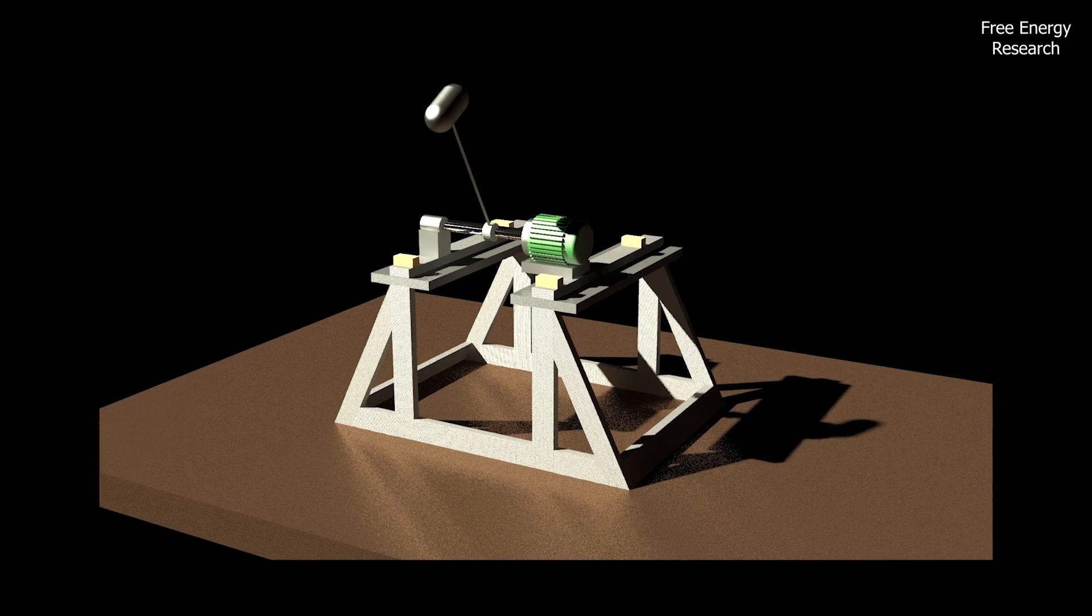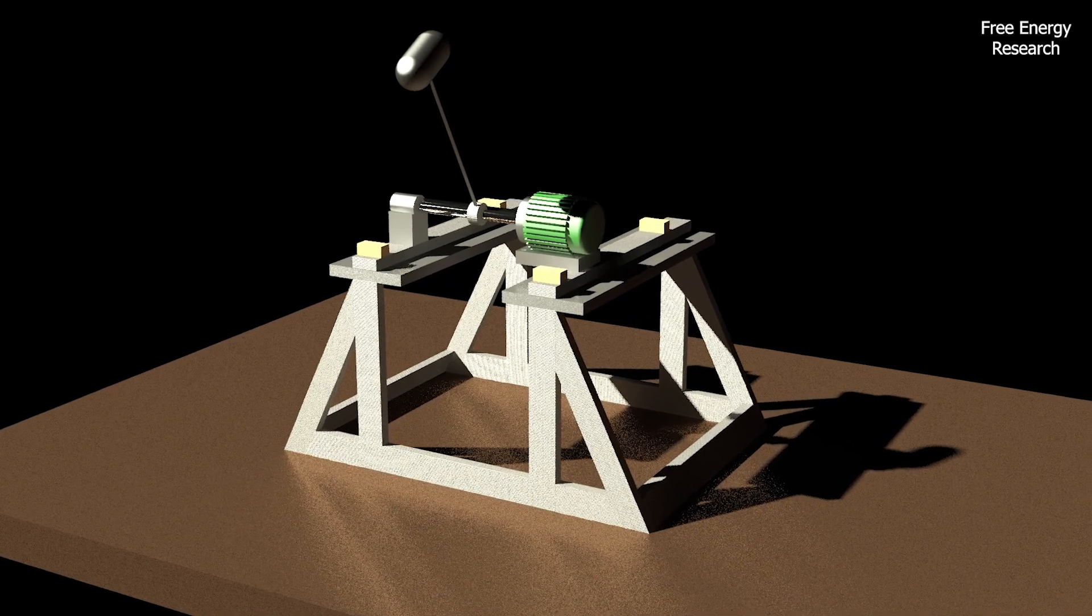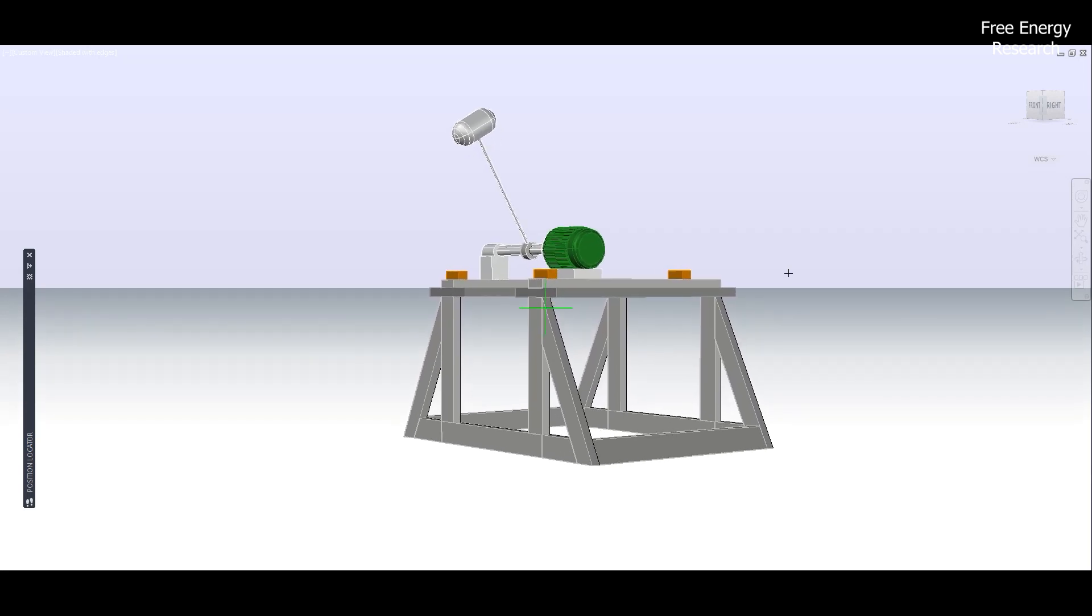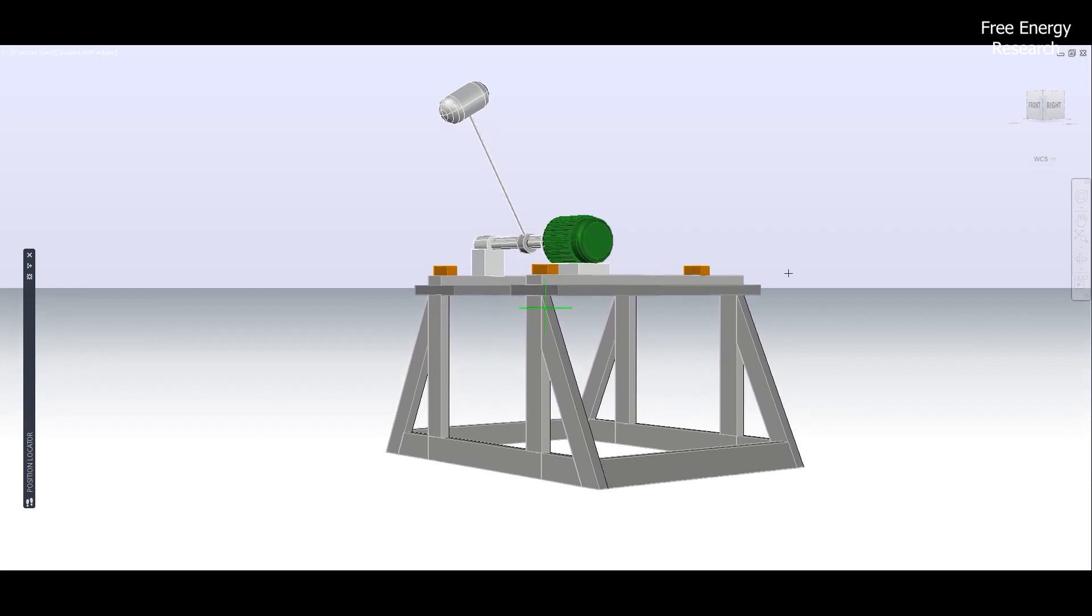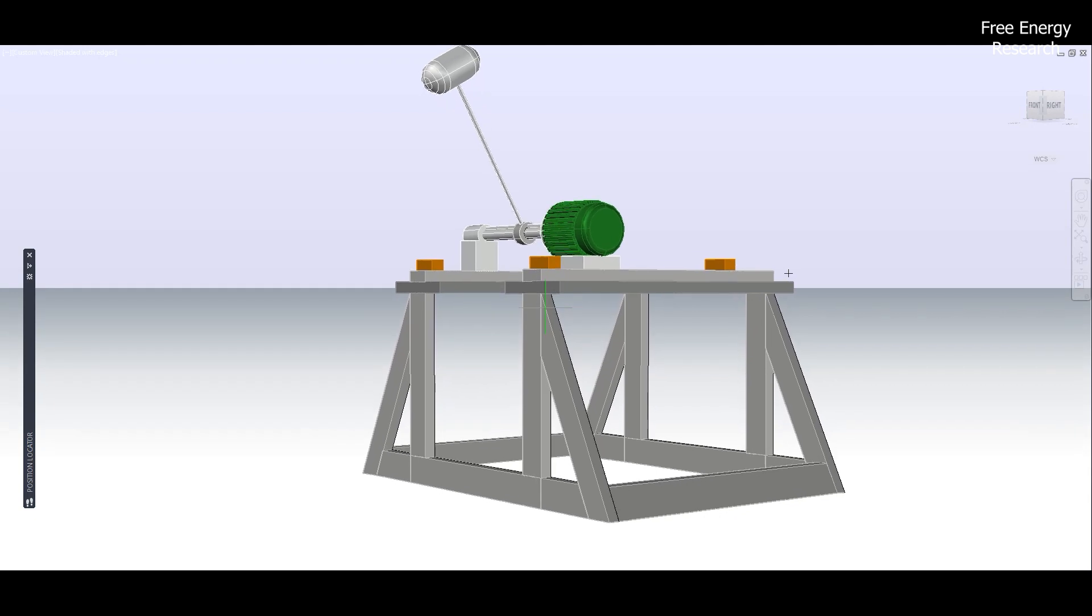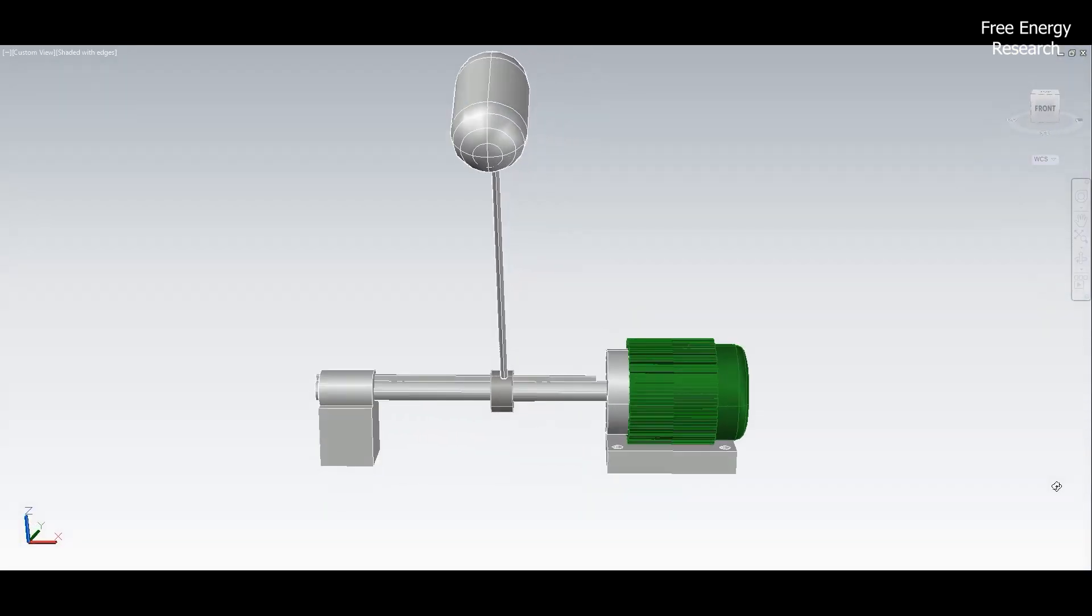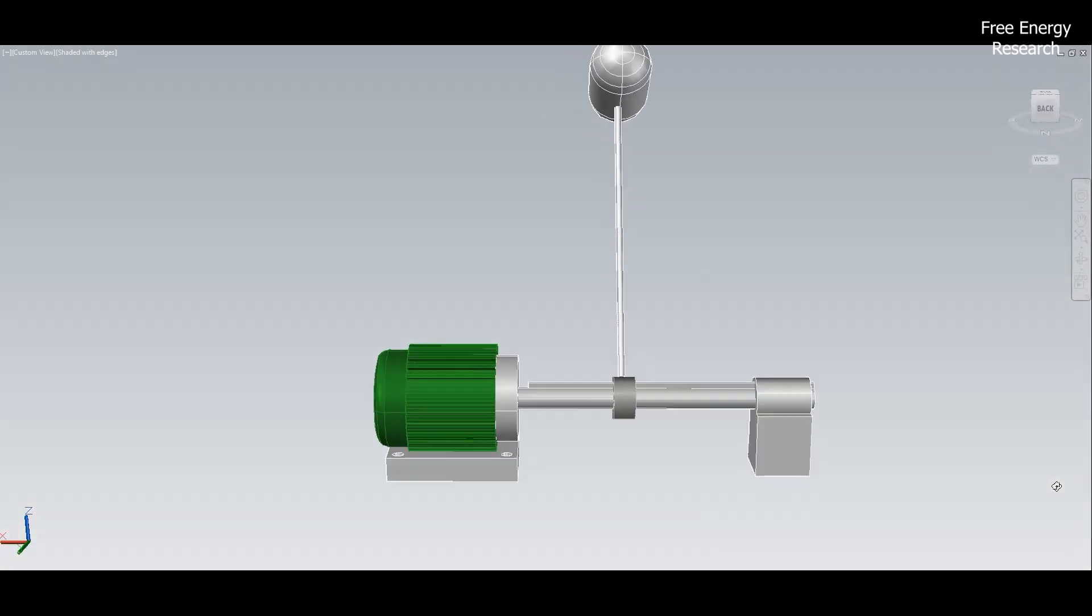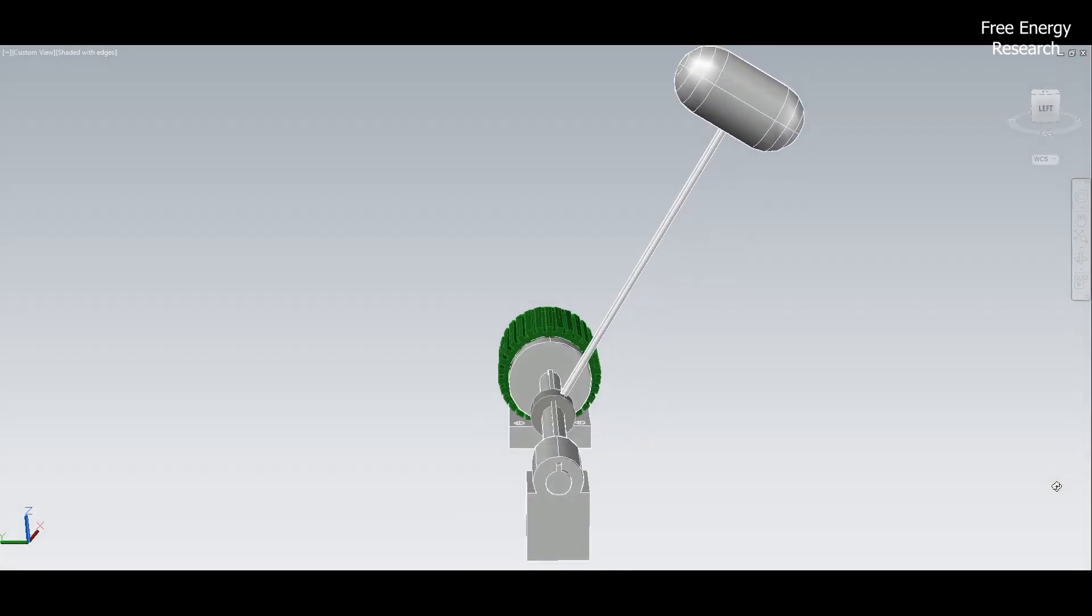What sets the Kenneth Claypool gravity-propelled generator apart is its versatility. From sleek urban installations to remote areas with limited resources, this machine fits seamlessly into any environment. Its cost-effectiveness and efficiency make it an ideal candidate for mass production, promising significant profits for corporations worldwide.